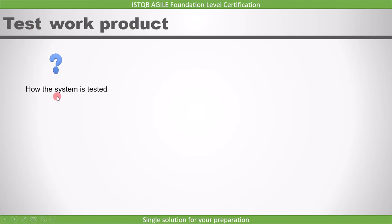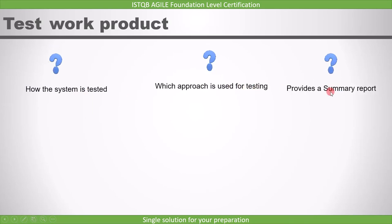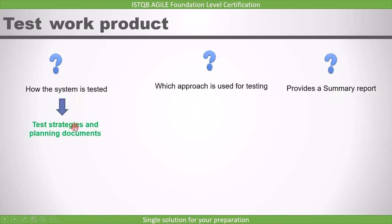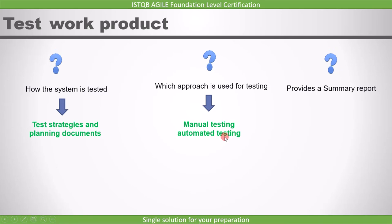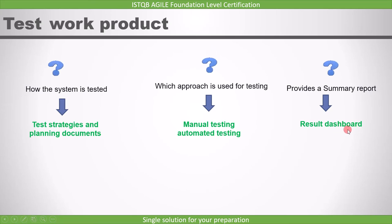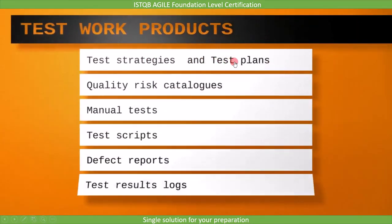The important one is the test work product. It describes how the system is tested, which approach is used for testing, and provides a summary report. How the system is tested is documented in test strategies and planning documents. The approach could be manual testing, automated testing, or both, and a summary report is provided in the form of a dashboard. The work products of the testing task are: test strategies, test plans, quality risk catalogues, manual tests, test scripts, defect reports, and test results logs.